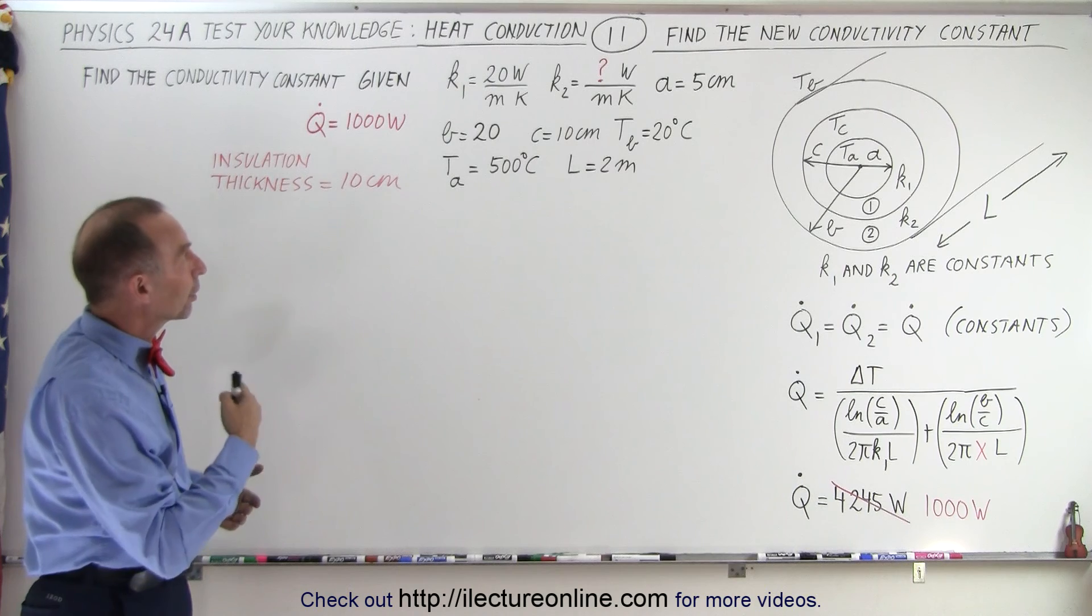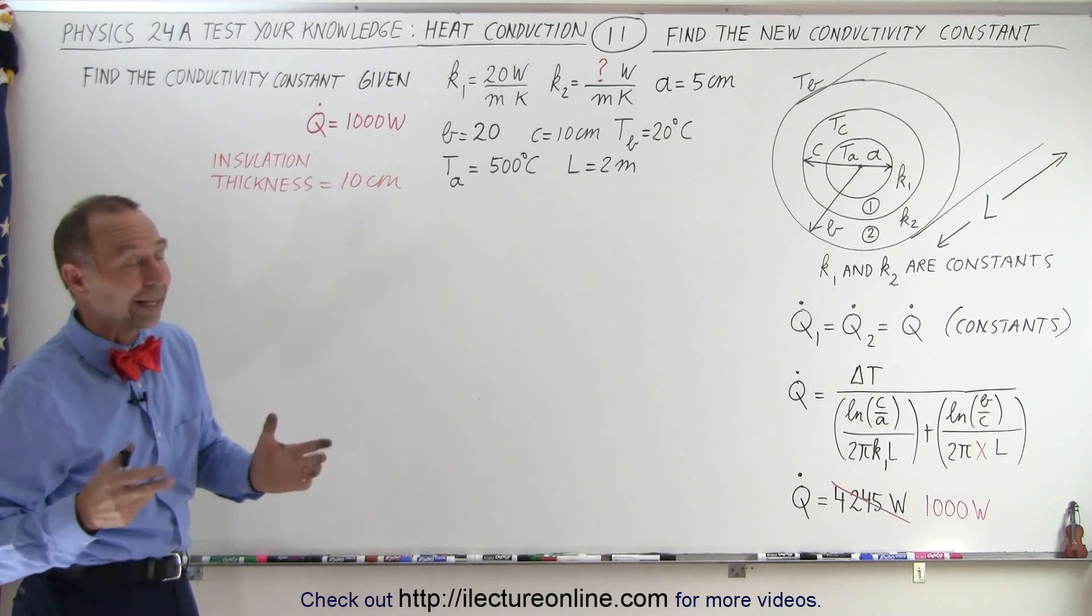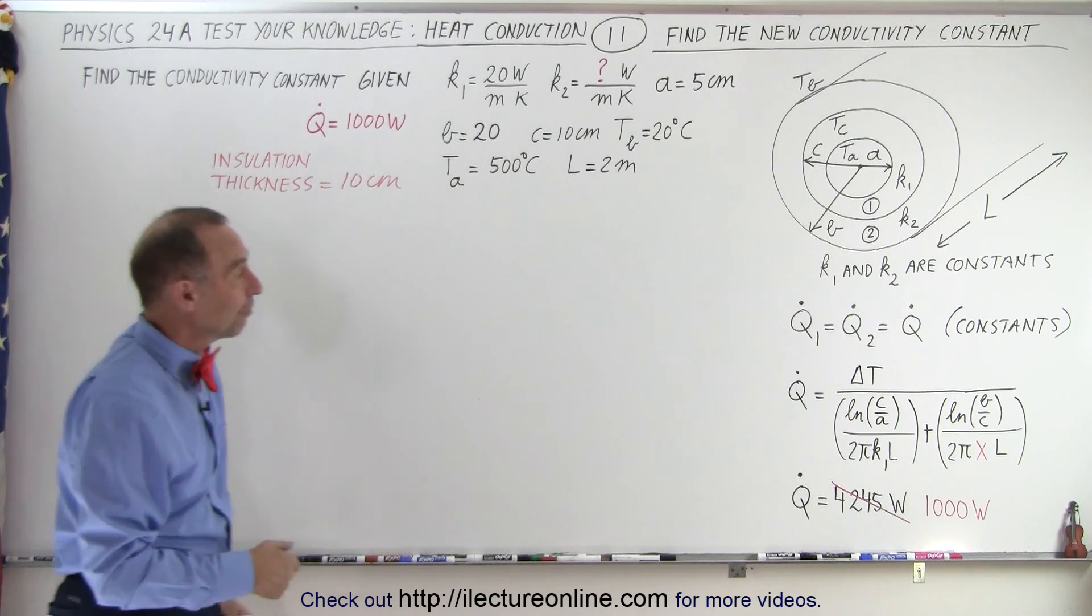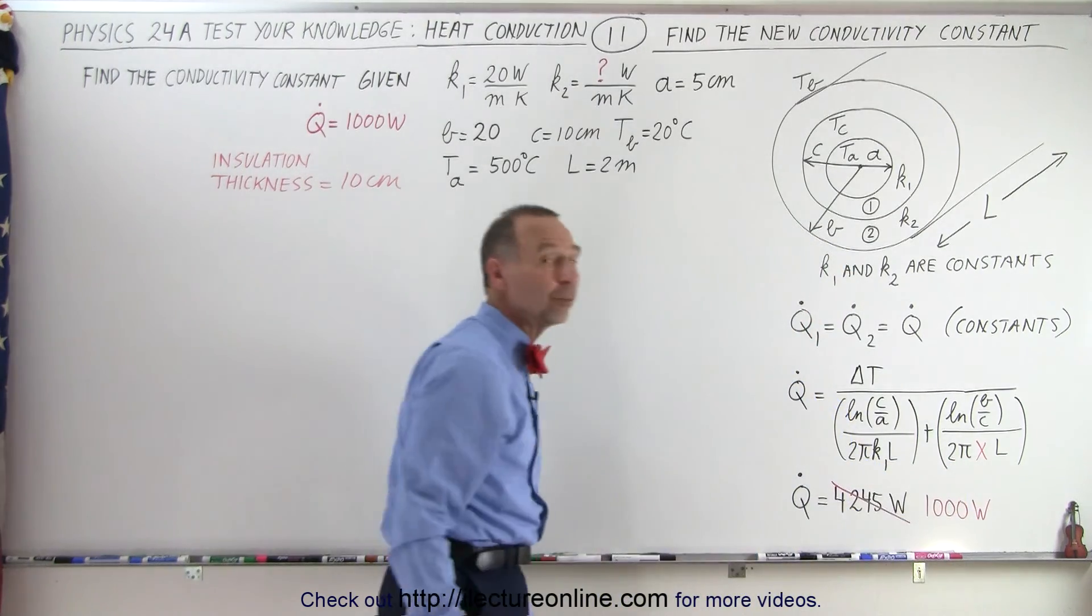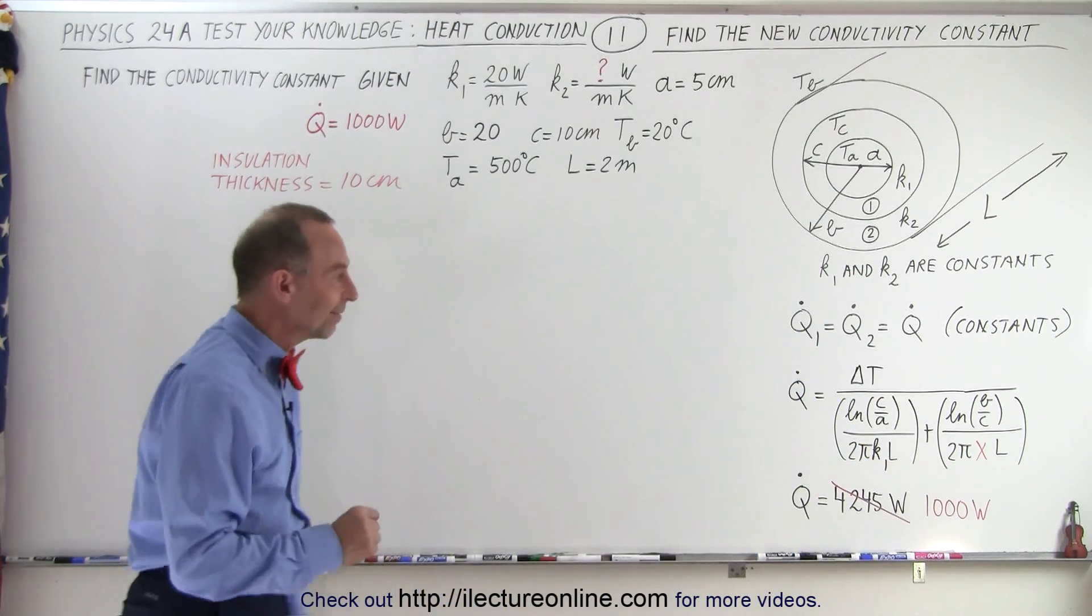We just need to find a new insulator with a thickness of 10 centimeters with a new insulation capability. In other words we want a new conduction constant for our second layer, our insulation layer, and we're going to find out what we need, what kind of insulation we need to keep it just at 10 centimeters.